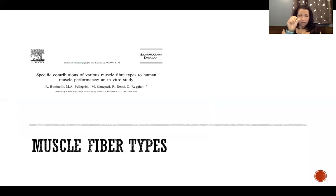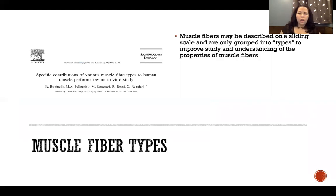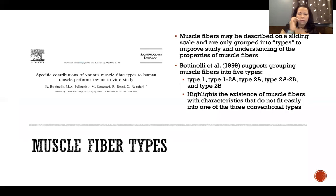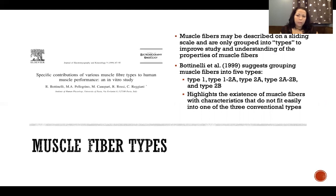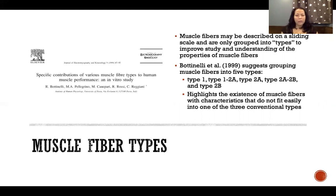Muscle fibers really are on a spectrum — a sliding scale of characteristics. Although we traditionally describe them in three groups, we could classify them in many other ways. Bottinelli, in a 1999 paper, studied muscle fibers and suggested grouping them into five types: type 1, type 1-2a, type 2a, type 2ab, and type 2b. This highlights that muscle fibers have variable characteristics that don't cleanly fit into just three types.